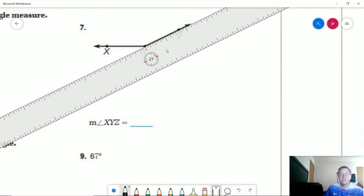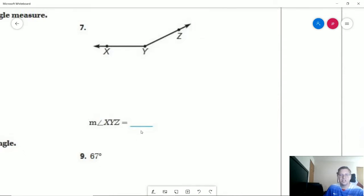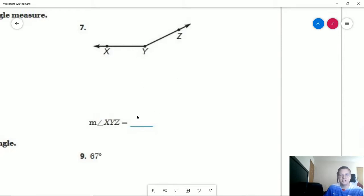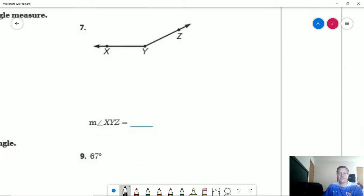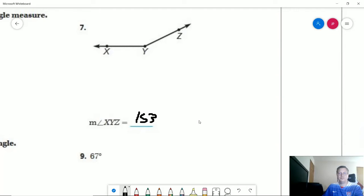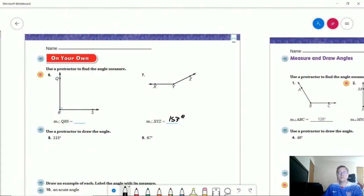So I'm coming up with 27 degrees away from being a straight line, so 180 minus 27 would give me 153. So anywhere between 150 and 155 should be a good measurement for that.